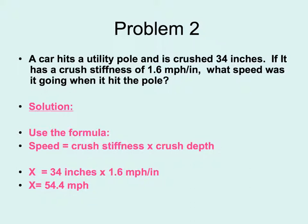In this example, a car hits a utility pole and the car is crushed 34 inches. If it has a crush stiffness of 1.6 miles per hour per inch, what speed was it going when it hit the pole?